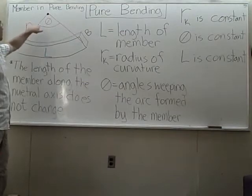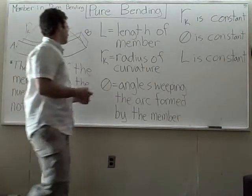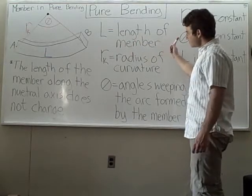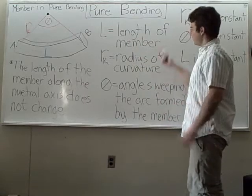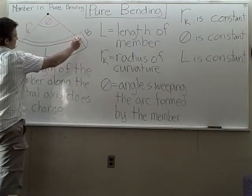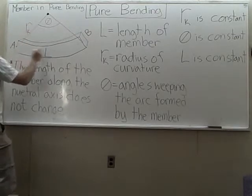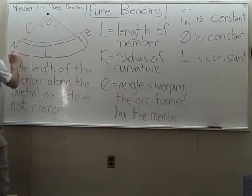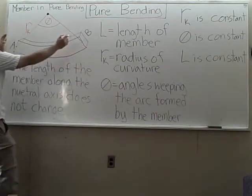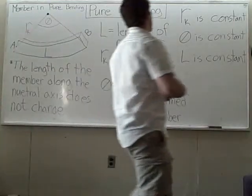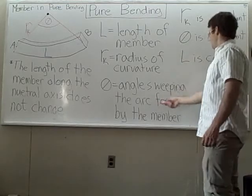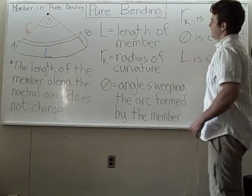The angle that sweeps out that part is going to be angle theta. Just to reiterate: the length L is the length of the member; it is also the length of the neutral axis — even after it bends. When this member bends, the distance from here to here is going to be a little bit shorter than from here to here, and the longest portion is going to be on the outside. So the bottom of the member is deforming and gaining length, while the top of the member is deforming and being compressed. The radius of curvature is going to be constant, the angle sweeping out the arc is constant, and the length of the member remains constant.